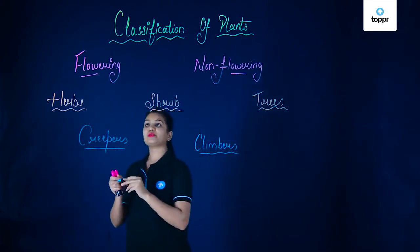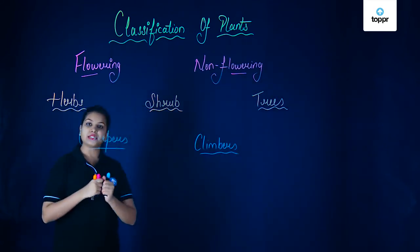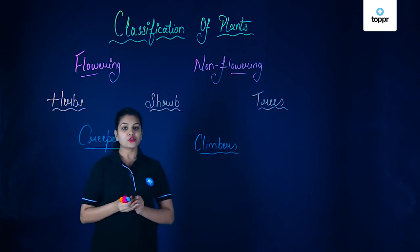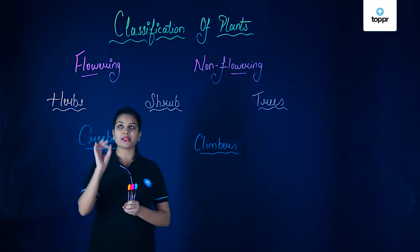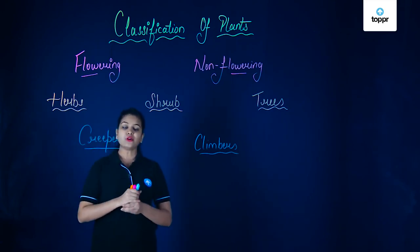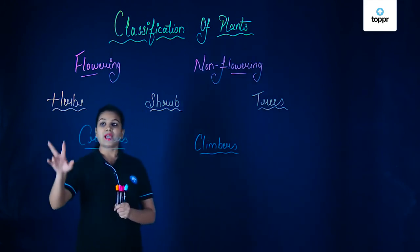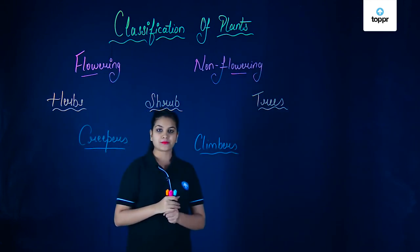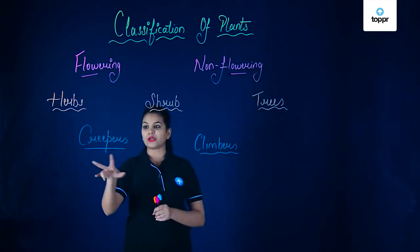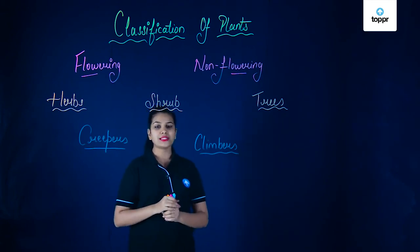To summarize, we have seen different types of plants divided into different categories. The first classification is on the basis of flowers: plants which bear flowers are called flowering plants; those which do not are called non-flowering plants. Second, on the basis of size and nature of stem, we have herbs, shrubs, and trees. Lastly, plants that creep on the surface are called creepers, and those that climb up a support are called climbers.